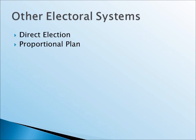Also, this plan can often lead to ties and disputed elections, which is really not preferable either. The next alternative would be the bonus plan, which, in an effort to make the electoral vote line up better with the popular vote, awards a 102 electoral vote bonus to the winner of the popular election. This sounds like a good idea, but in practice, this results in the exact same thing as if we just went with a direct election.